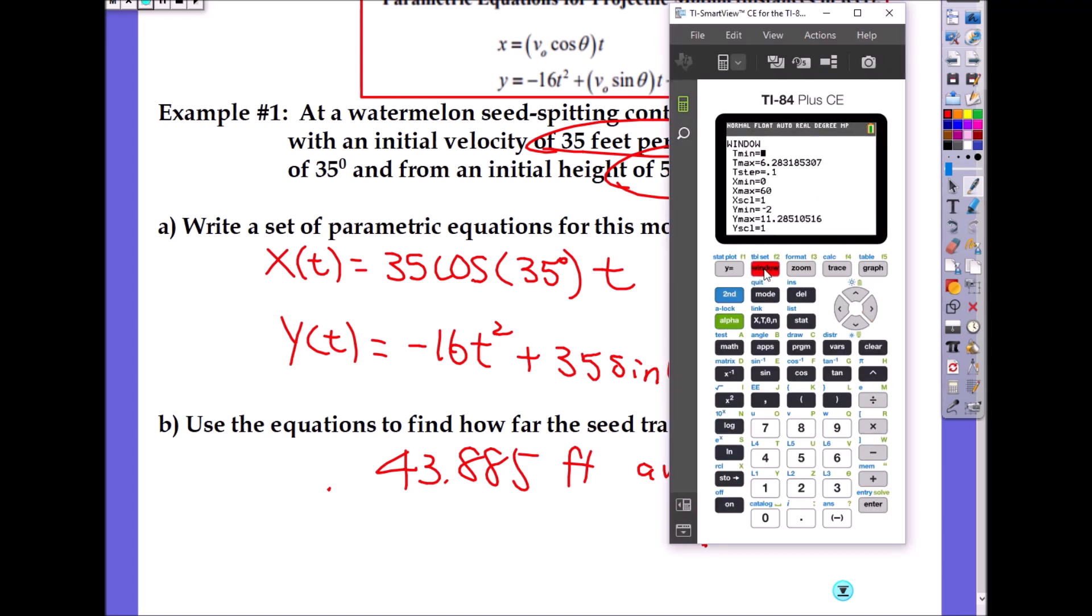Again, in the window it's important that you set the t-step always to 0.1. I'll show you what that does. X max was 60. Go back and check your equation.